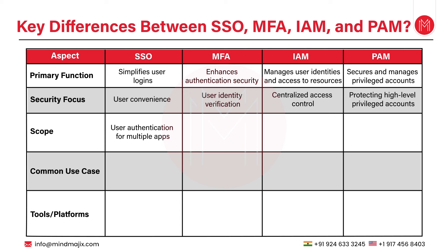MFA has a narrow but deep scope in terms of enhancing the security of user identities. Its role is focused on ensuring that the person accessing a system is who they claim to be by adding layers of verification beyond just a password. The scope of IAM is a very broad one, encompassing the full lifecycle of user identity and access control. It manages user roles, permissions, authentication methods, and access policies across organizational systems. IAM is central to access governance and compliance management.